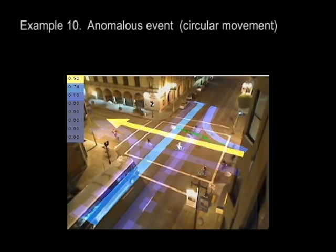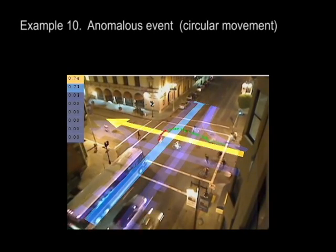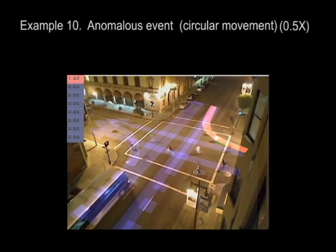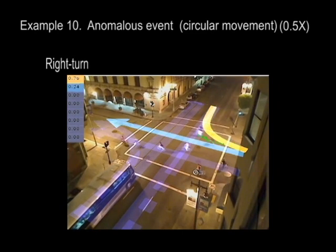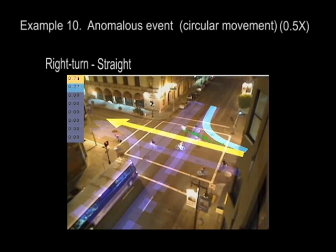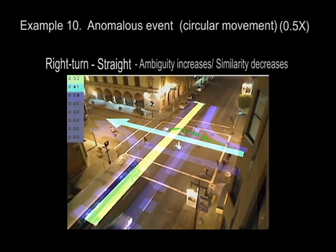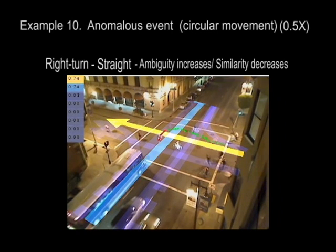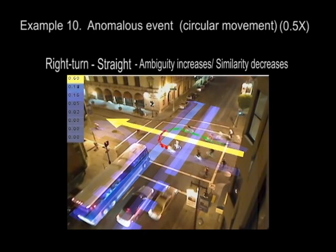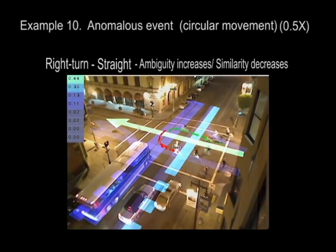Here, we show detected anomalous behavior of a person riding a bike inside the intersection. It is initially classified as normal behavior, and then quickly changes to anomalous behavior. More details and quantitative evaluation are shown in the paper.